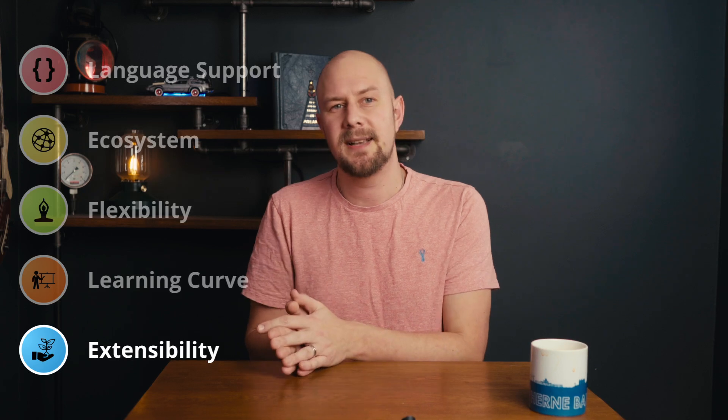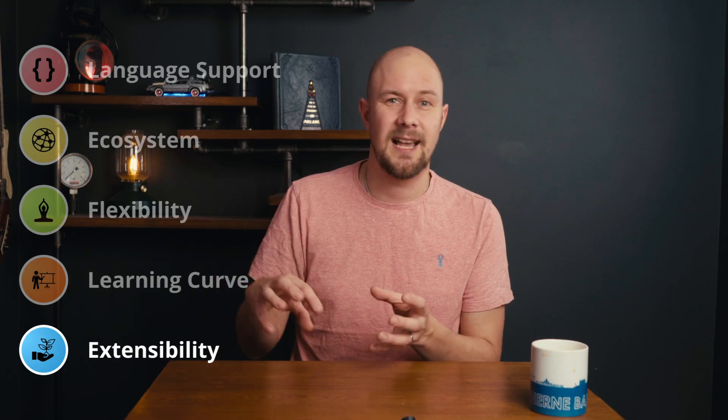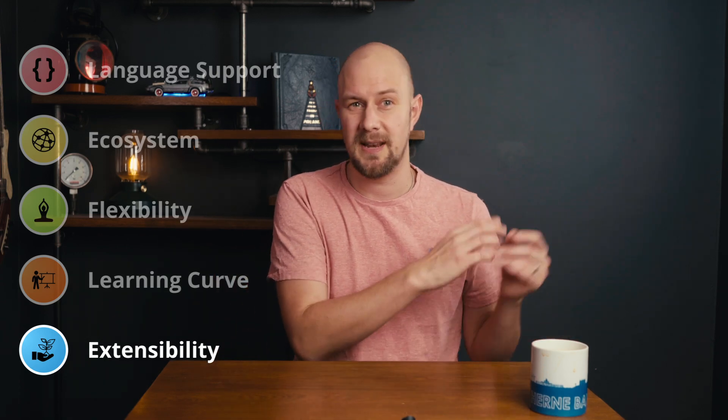And we're down to the last category: extensibility. When you're picking between the AWS CDK and Terraform, extensibility is one of those areas where the tools really show their personality. The AWS CDK is like having a massive toolbox and you get to decide exactly how to use it. Because it uses general-purpose programming languages, you can write your own reusable constructs and do pretty much whatever you want as a software developer. You can package logic into a library and share it across your projects and other CDK projects. So if you've got a common pattern — like a VPC with specific security group rules — you can wrap that into a construct and suddenly that's a reusable piece of code.